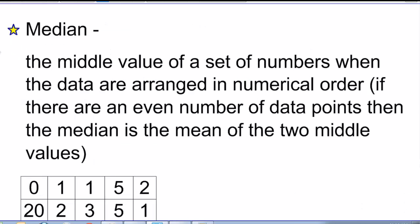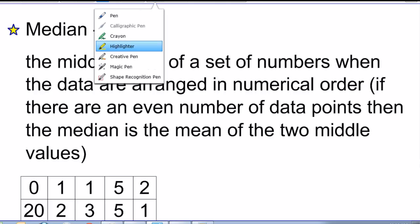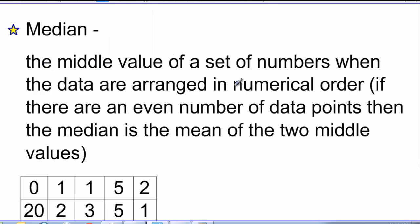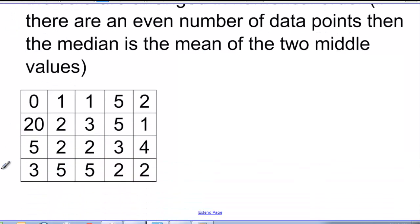Another thing we can look at when we want to describe a set of data is the median. Median is the very middle value of a set of numbers when the data are arranged in numerical order — in other words, put them in order from smallest to largest, and the very middle value is the median. If there are an even number of data points, then the median is the mean of the two middle values. In this case, remember, I have 20 numbers here, so there are an even number of data points.